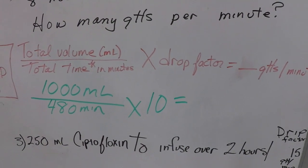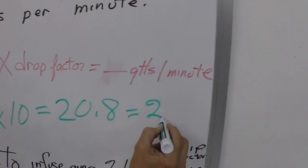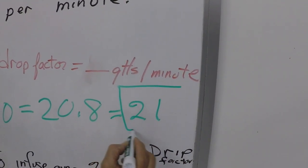Okay, and when we do the math we get 20.8 and we have to have a whole number. So 21 drops per minute.